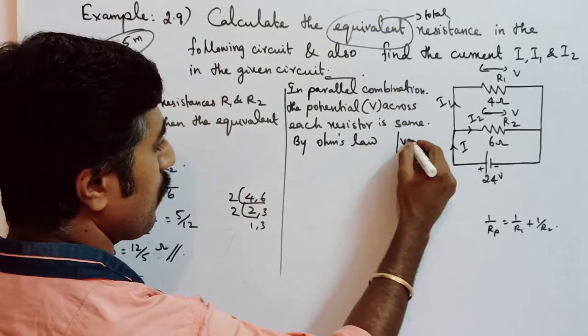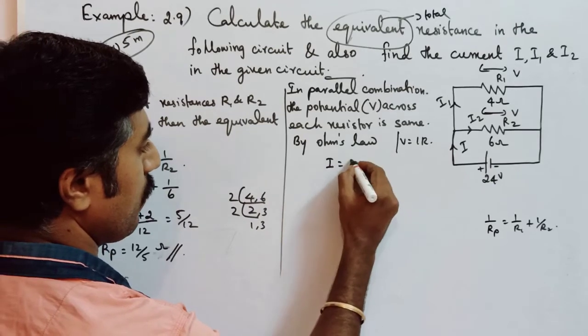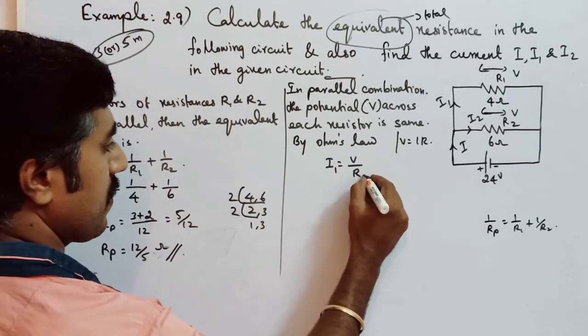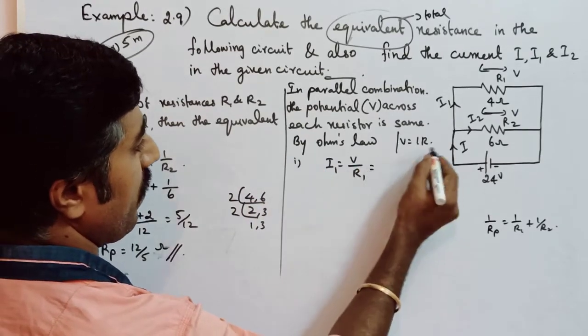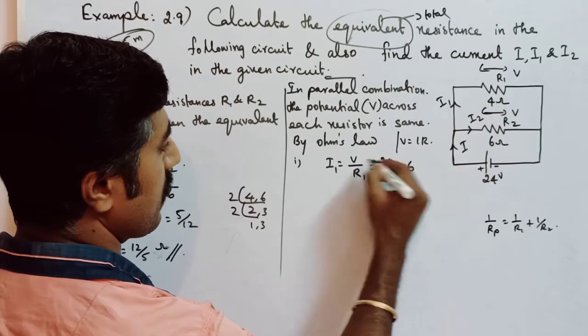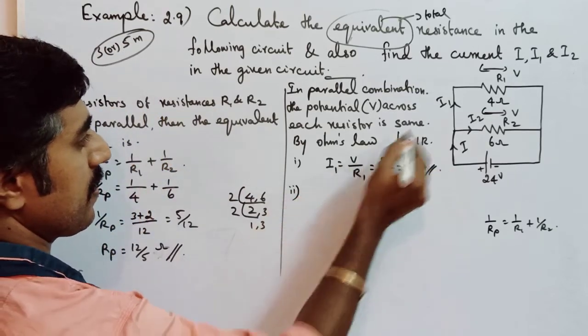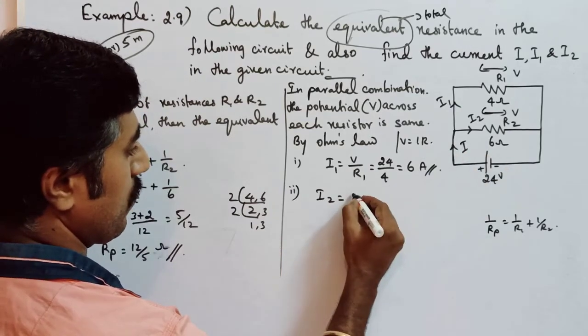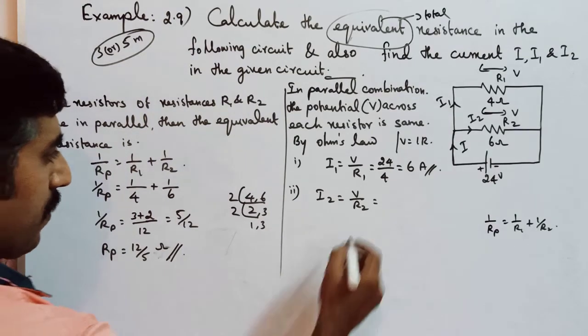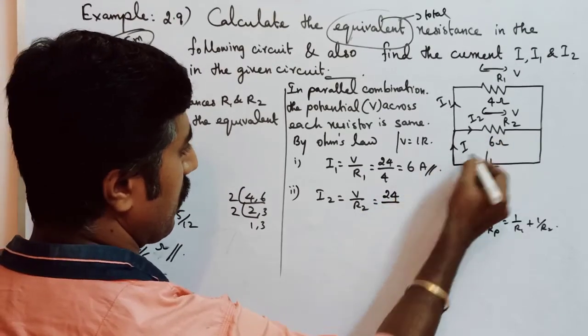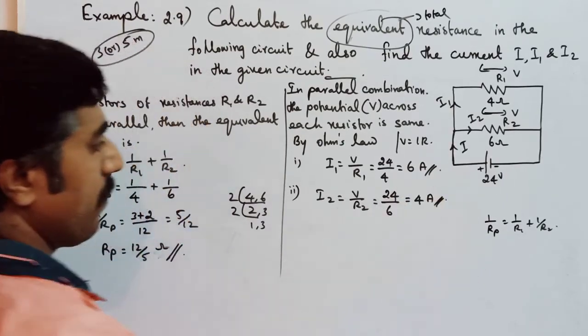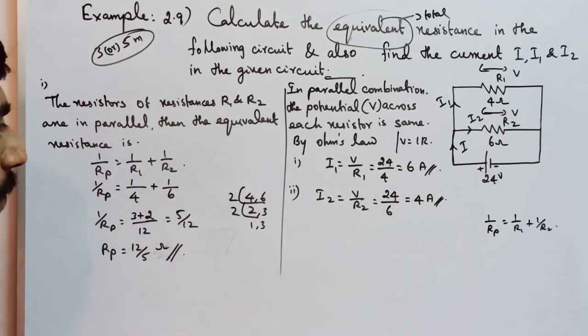For I1, potential is the same, V by R1. It is equal to V value is given 24 by R1, 4, equals 6 Ampere. And the second resistor current across I2 is equal to V by R2. Potential in parallel combination over each resistor is same, so V value 24 by R2 is 6, equals 4 Ampere. So here 6 Ampere, here 4 Ampere.